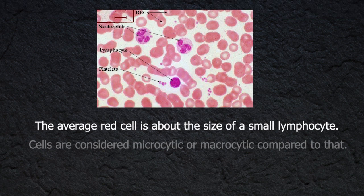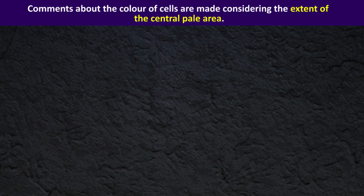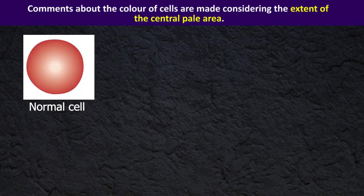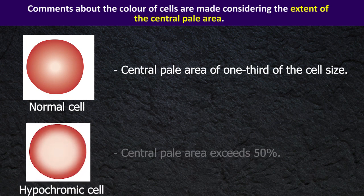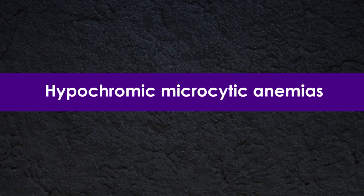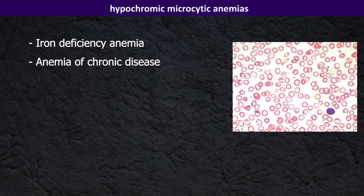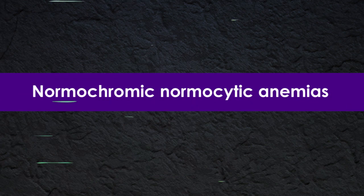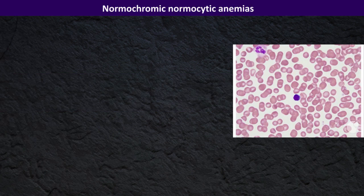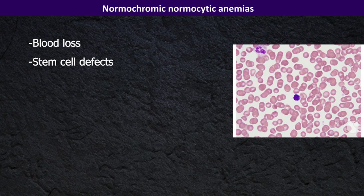The average normal red cell is about the size of a small lymphocyte. Cells are considered microcytic or macrocytic compared to that. Regarding color, normal cells exhibit a central pale area of one third of the cell size. If it exceeds 50 percent, the cells are considered hypochromic. Iron deficiency anemia, anemia of chronic disease, aplastic anemia, and thalassemia are examples of hypochromic microcytic anemias.